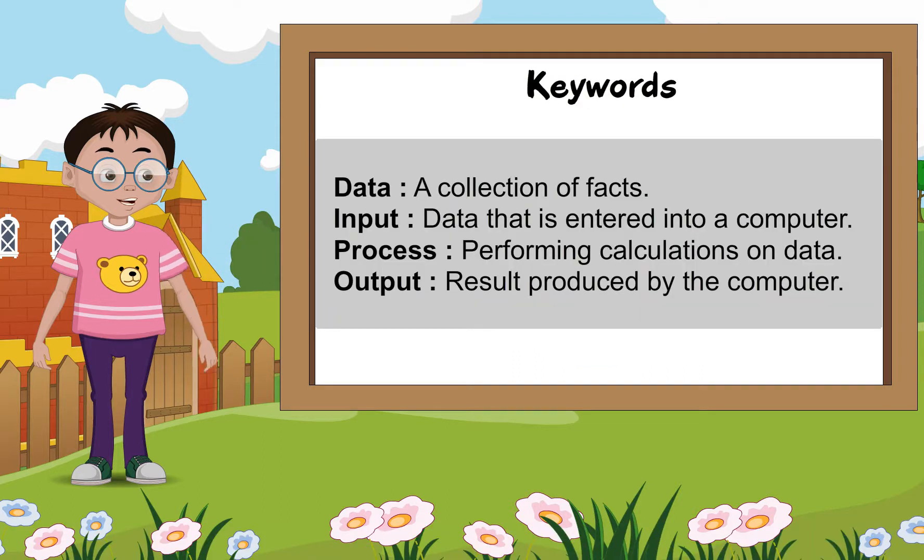Keywords: Data - a collection of facts. Input - data that is entered into a computer. Process - performing calculations on data. Output - results produced by the computer.